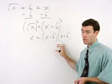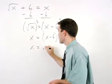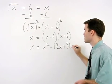And foiling the right side, we have x equals x squared minus 12x plus 36.